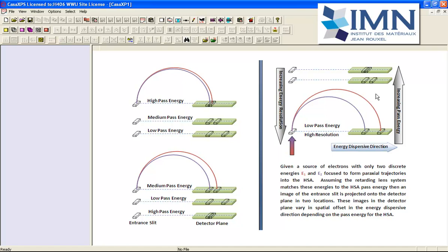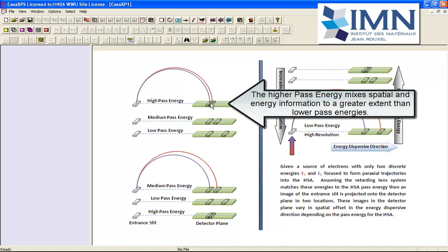If we increase the pass energy, then the separation of these images diminishes. Here's an example where we have a high pass energy, so the electrons have greater energy as they go around the hemispherical analyzer. They are spread less significantly in the energy dispersive direction and we may end up with overlapping spatial information and energy information.